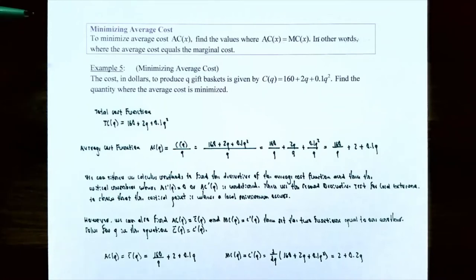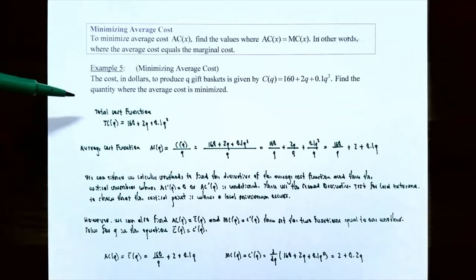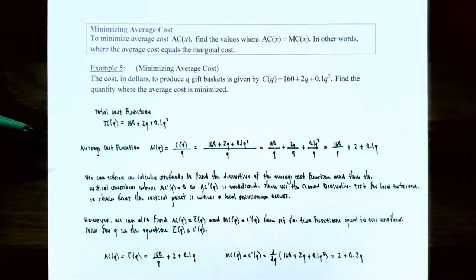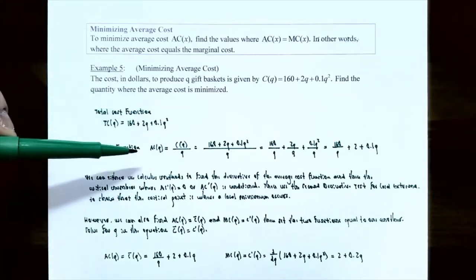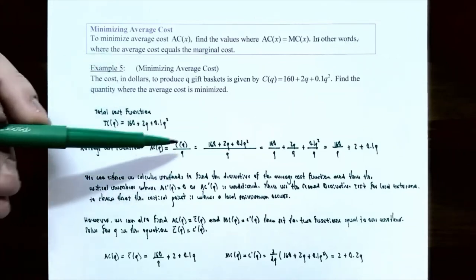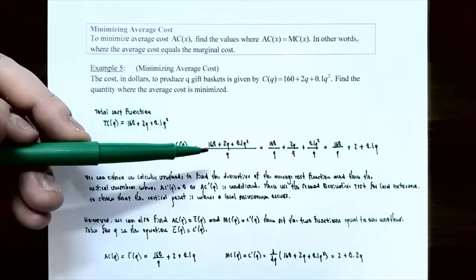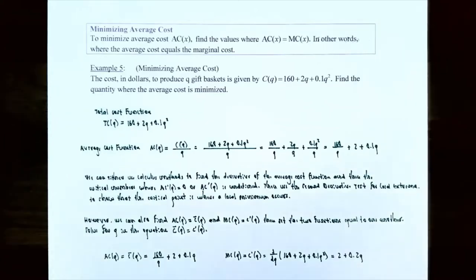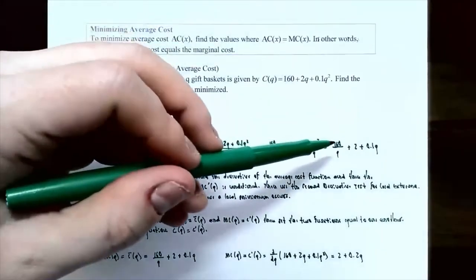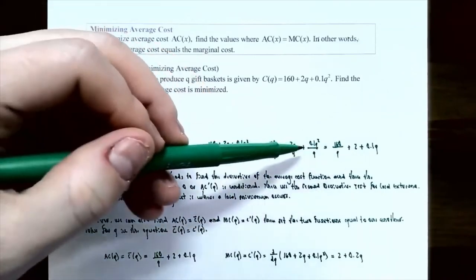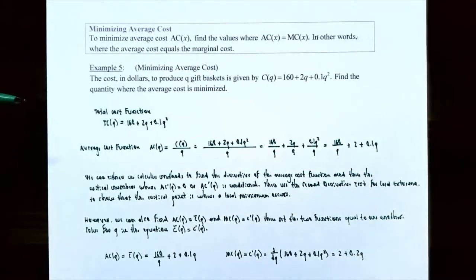To minimize the average cost AC(x), find the values where AC(x) = MC(x), i.e., where the average cost equals the marginal cost. Example five: the cost in dollars to produce q gift baskets is C(q) = 160 + 2q + 0.1q². Find the quantity where the average cost is minimized. The average cost function AC(q) = C(q)/q = (160 + 2q + 0.1q²)/q. Dividing each term by q: AC(q) = 160/q + 2 + 0.1q.